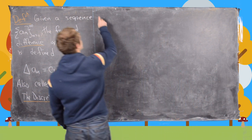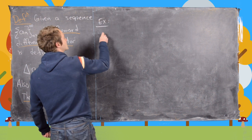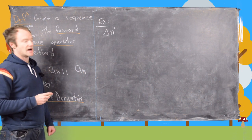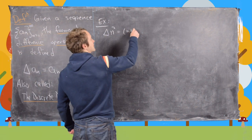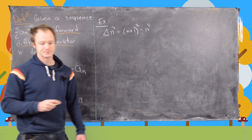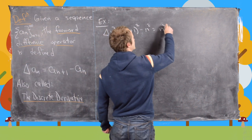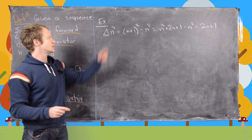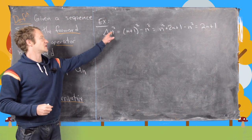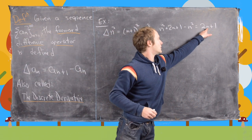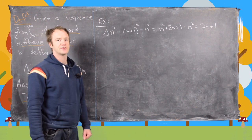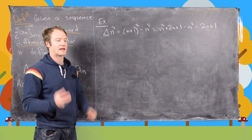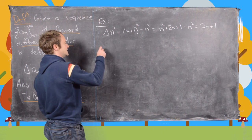Let's look at a simple example: n squared, which is the sequence 1, 4, 9, 16, and so on. Delta of n² equals (n+1)² minus n², which gives n² + 2n + 1 minus n², so we get 2n + 1. Notice this almost looks like the power rule — the squared came down to multiply n to the first power, but we got a plus one. So we might ask: is there something we can do to make a perfect version of the power rule?